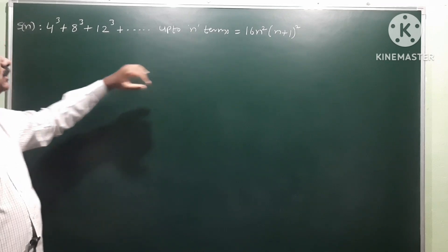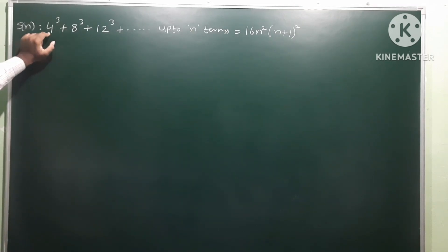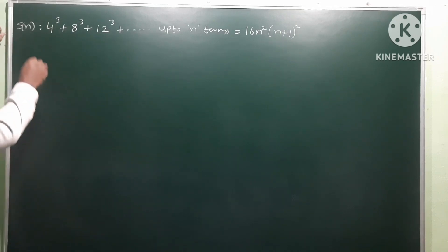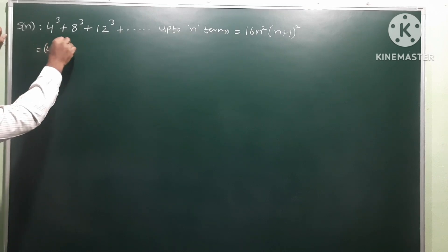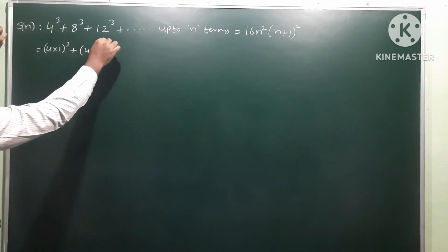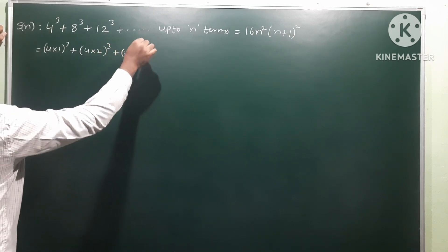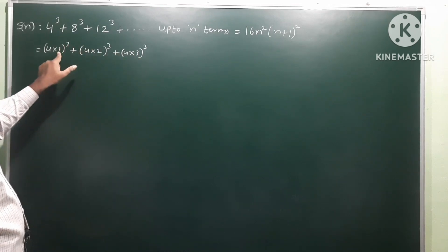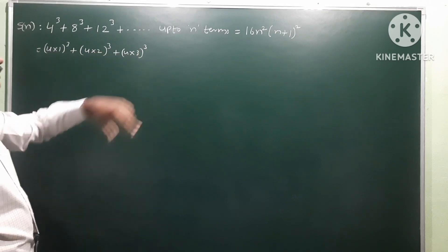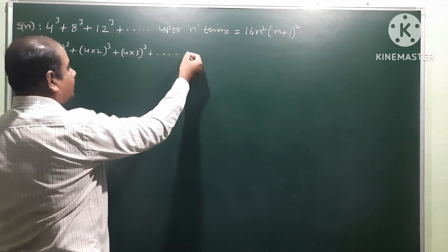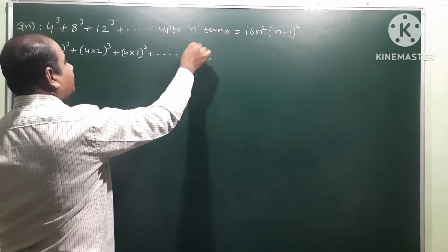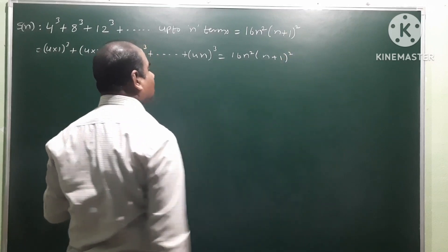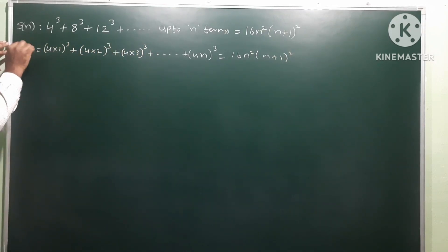To find the nth term, observe the pattern: first term is 4³, second term is 8³, third term is 12³. We can write these as (4×1)³, (4×2)³, (4×3)³. So the nth term is (4n)³, which equals 16n² into (n+1)². This is the sum of n terms.